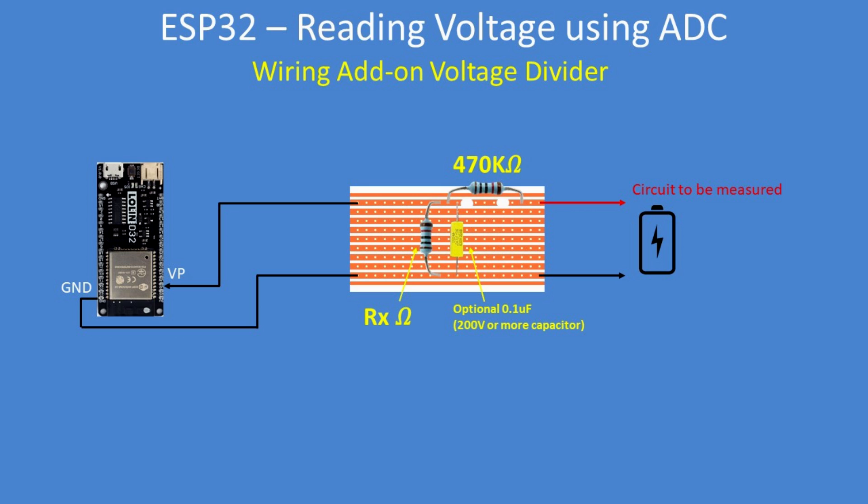You can use any of the ADC inputs of the ESP32. A series resistor from the circuit to be measured — I've chosen 470 kilohms — and then another resistor that runs from the junction of that resistor down to ground, then over to the ADC input with an optional smoothing capacitor of 0.1 microfarad.